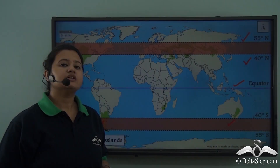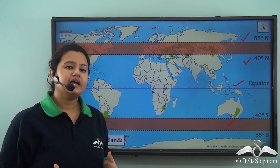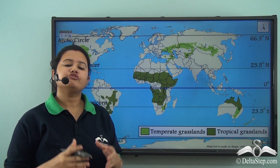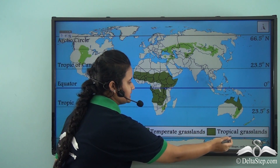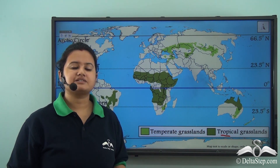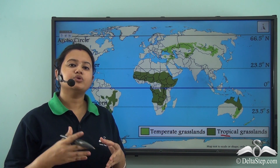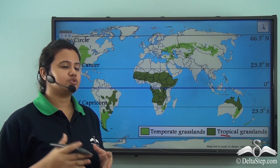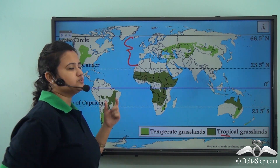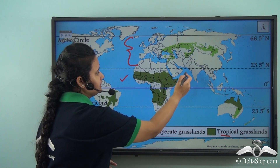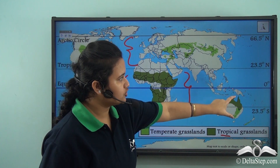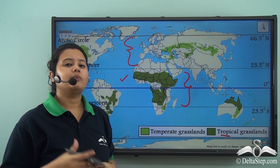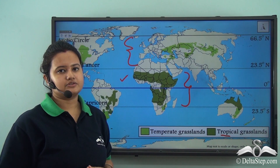Temperate grasslands are located between 40 to 55 degrees north and south of the equator. Temperate grasslands is a type of biome located in the temperate zone, on both hemispheres. Both temperate and tropical grasslands refer to treeless regions, but differ in location — temperate grasslands are in the temperate zone, while tropical grasslands are between the Tropic of Cancer and Tropic of Capricorn.